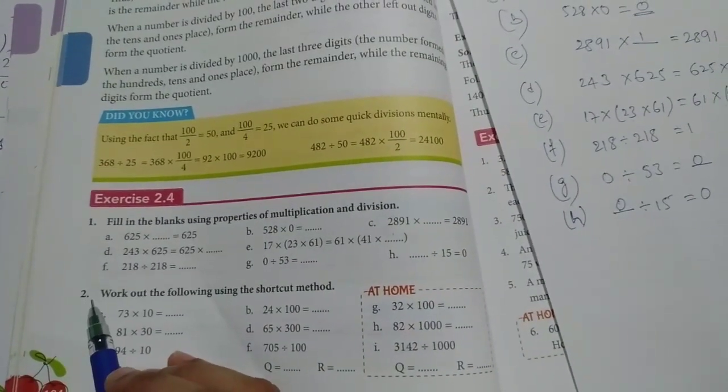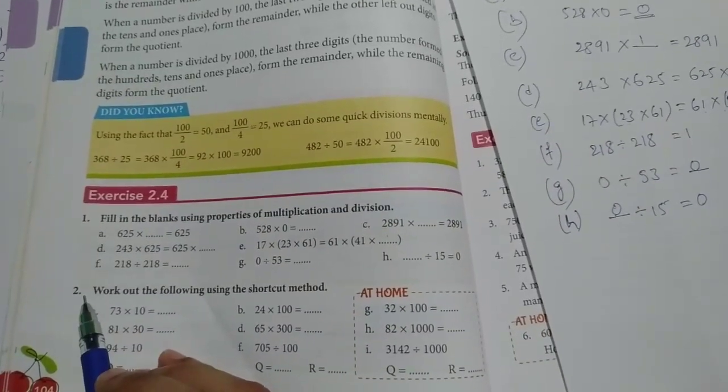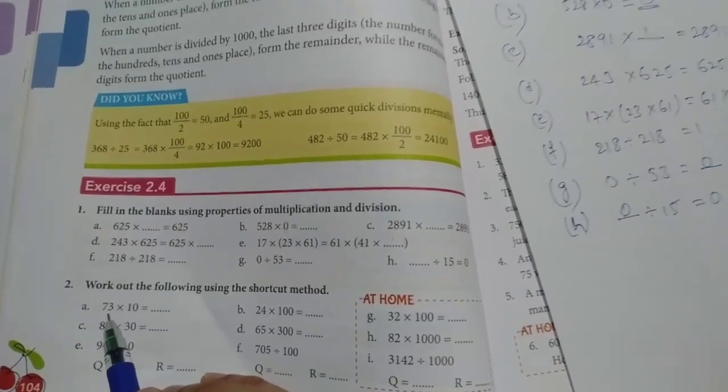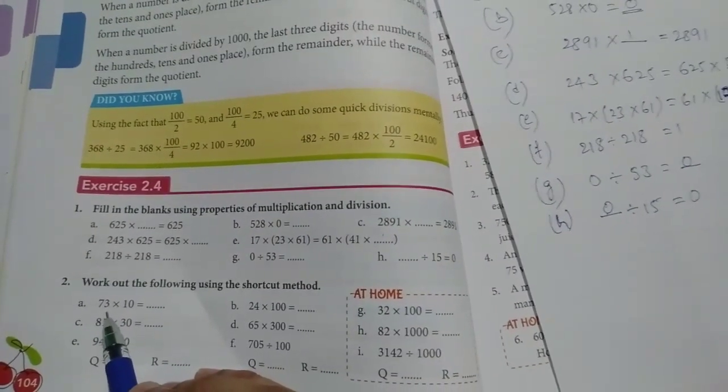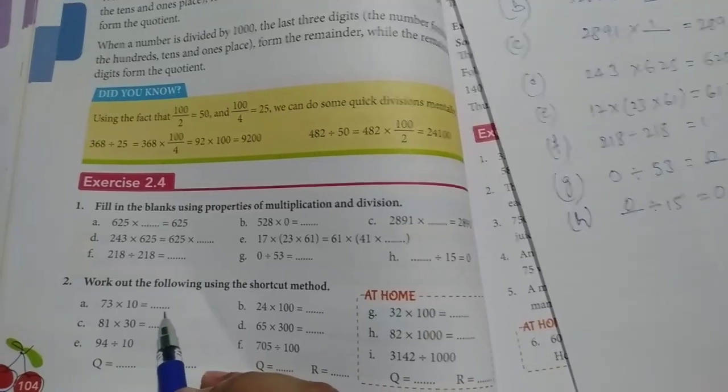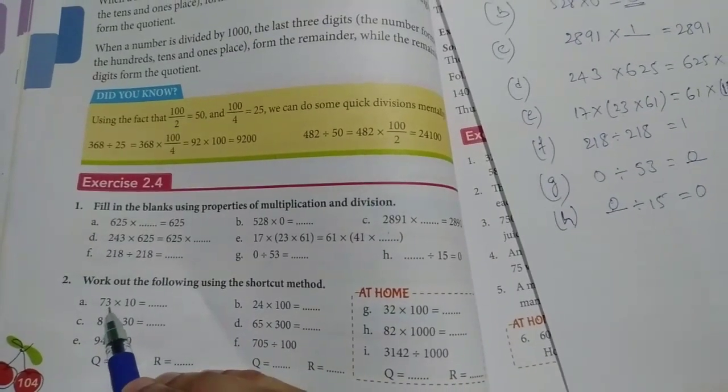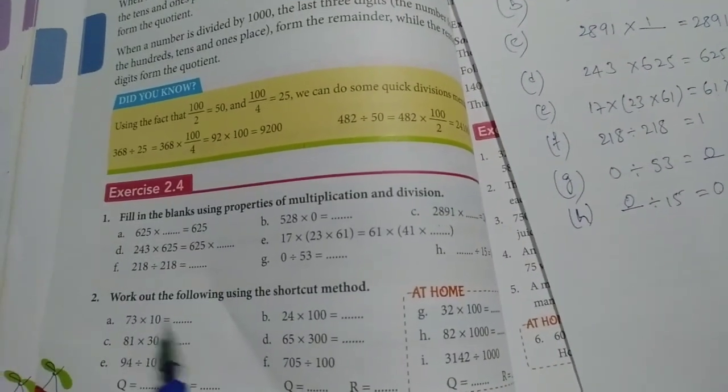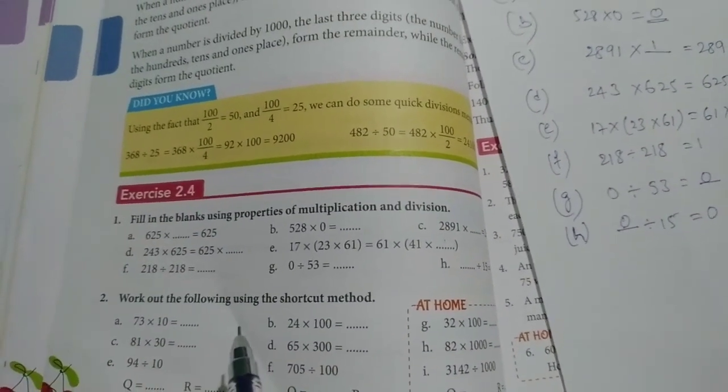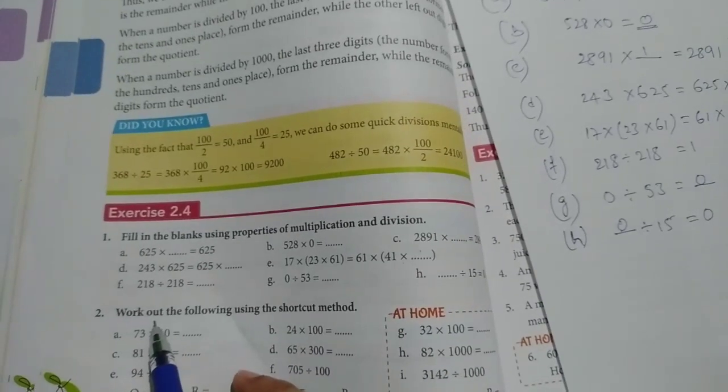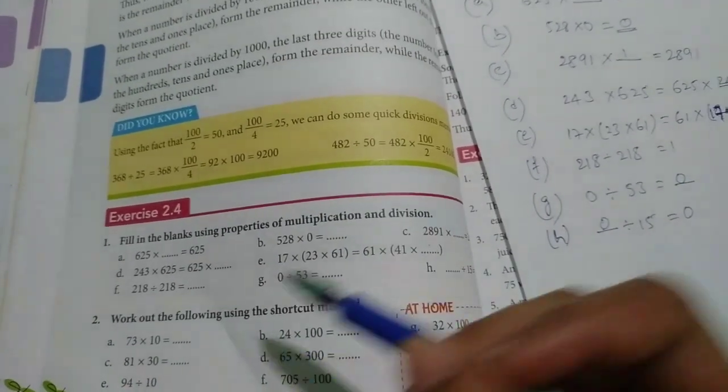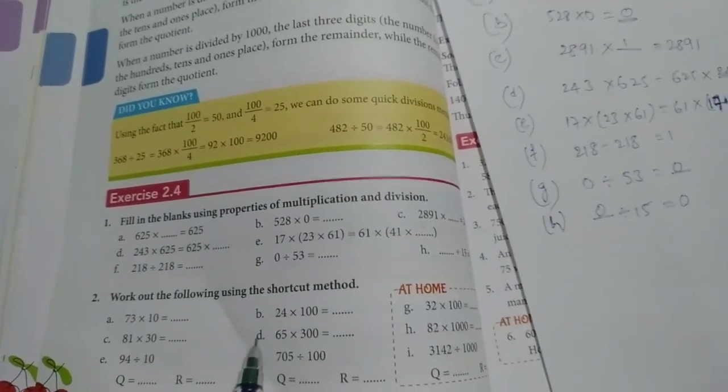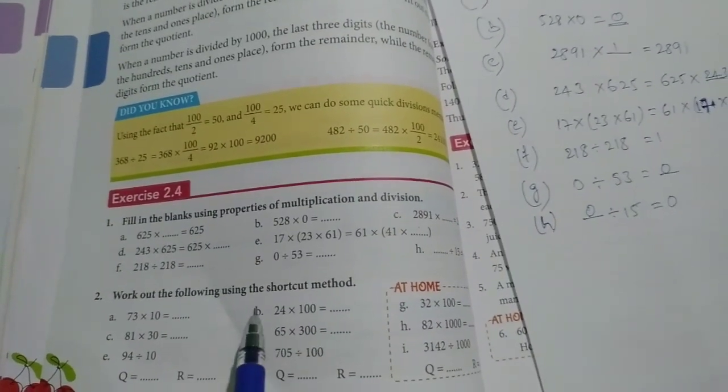And here, second main section: work out the following using the shortcut method. Did I explain you? How to write 73 into 10 is equal to dash? In the easy method we can write without multiplying. This I will explain in the next class. Try to do these problems. This method I already explained you. Otherwise, I will explain in the next class.